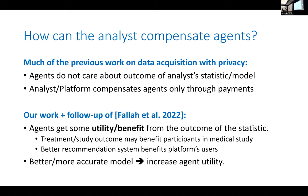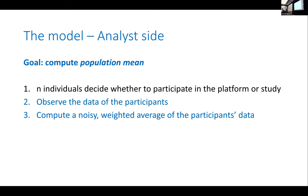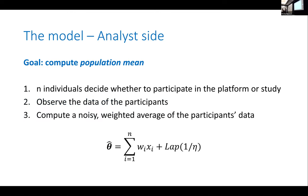I want to model the simplest possible version of this problem — the simplest statistical task in this setting. I'm going to try to understand some mean property of my population, such as a mean genomic property in a medical study. As the analyst, I'll face n individuals who will decide whether to participate in my study or platform. I'll observe the data of the participants and compute a noisy, weighted average of that data.